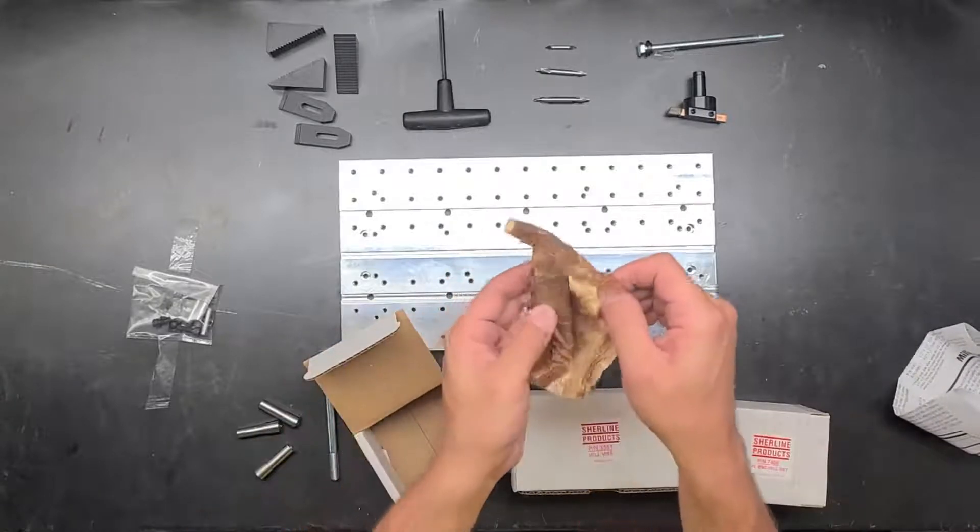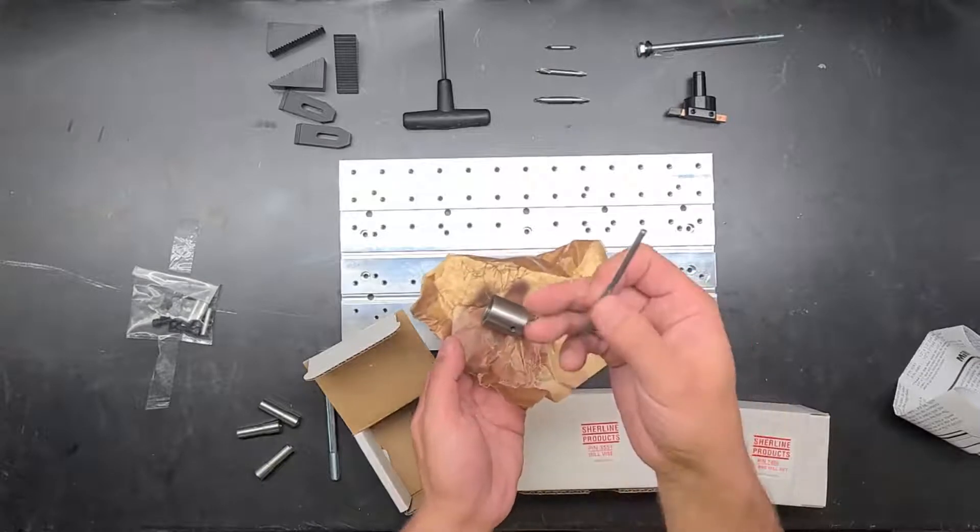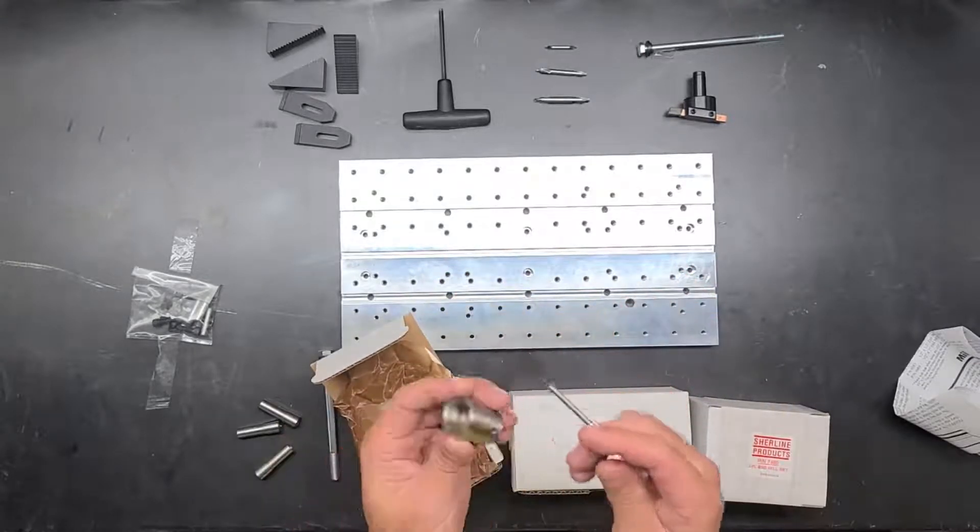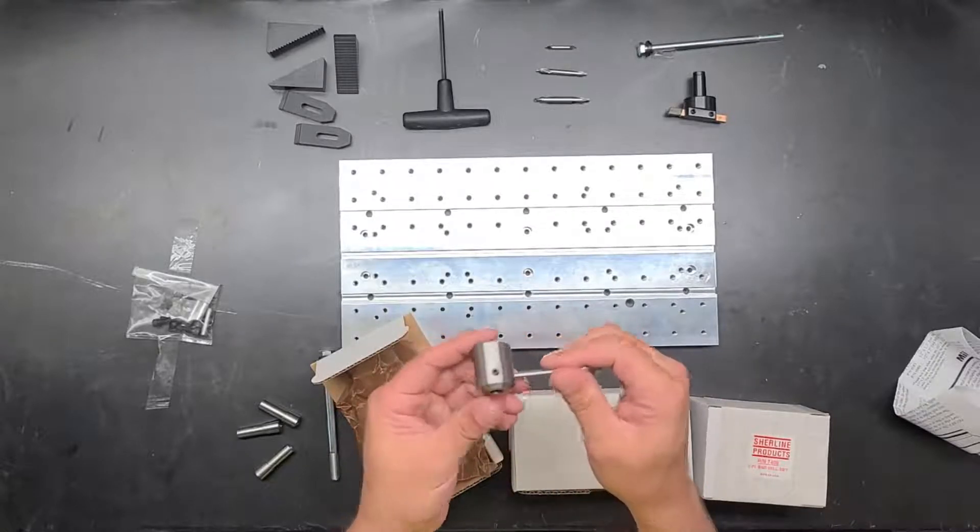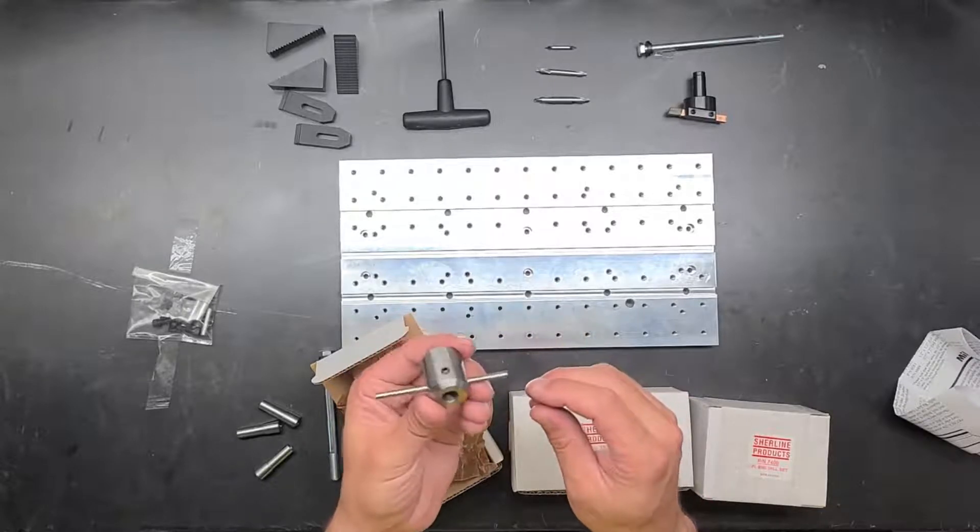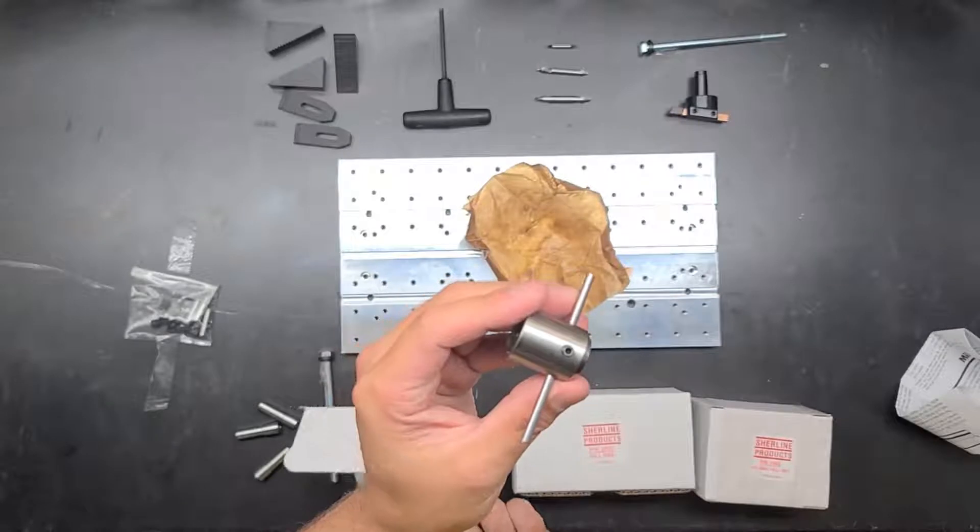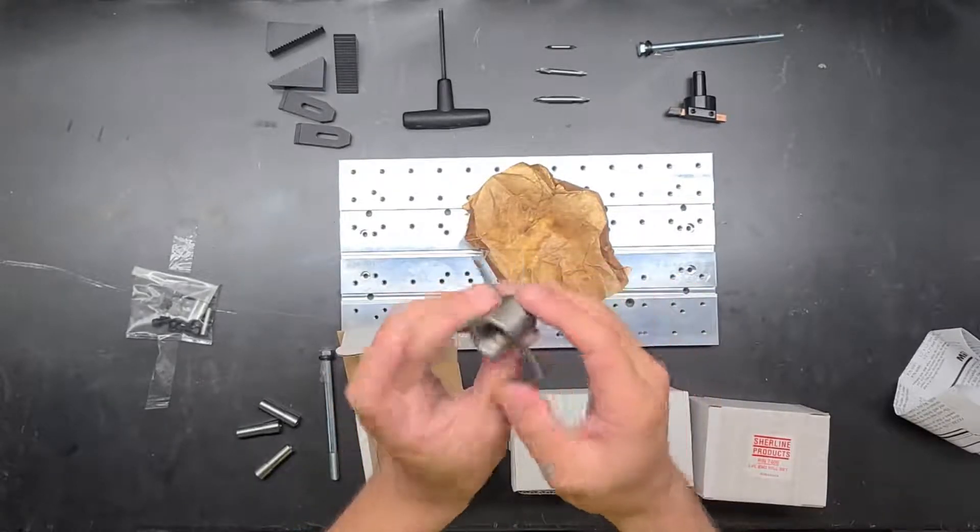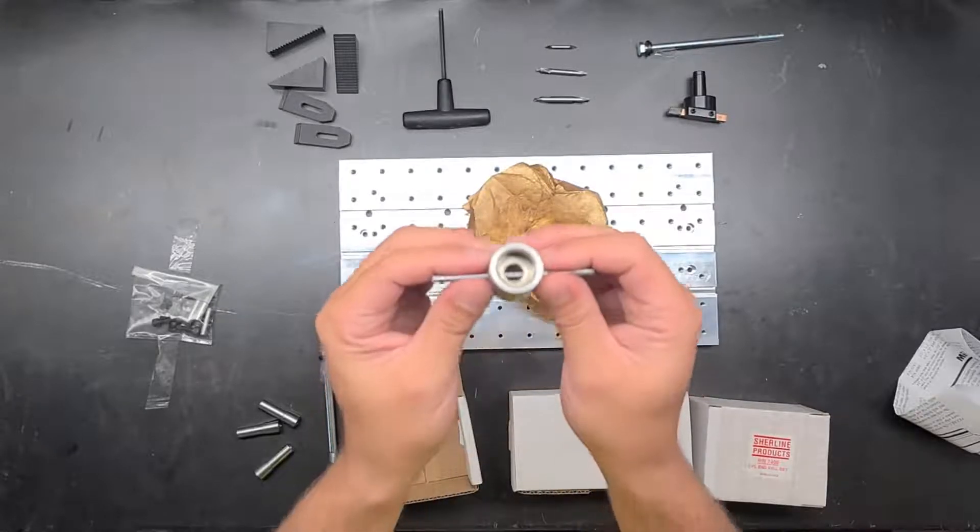Nicely packaged in this rust inhibiting paper. So I'm always glad to see that. It comes with another Tommy bar. So the lathe came with one Tommy bar and then this comes with the mill collets, its own Tommy bar and see the set screw here. Kind of surprised there's no hex wrench for this. But a set screw here and this threads into the spindle of the mill.